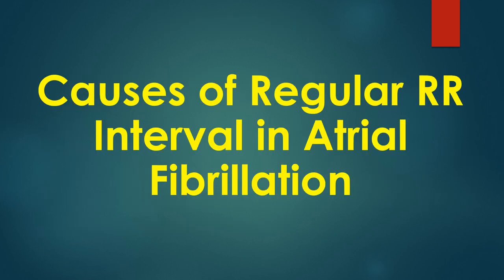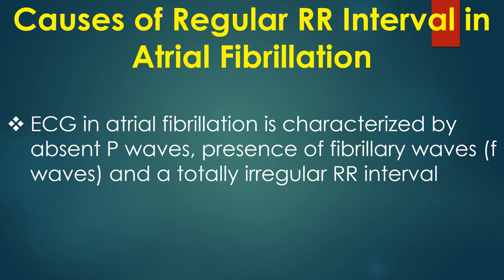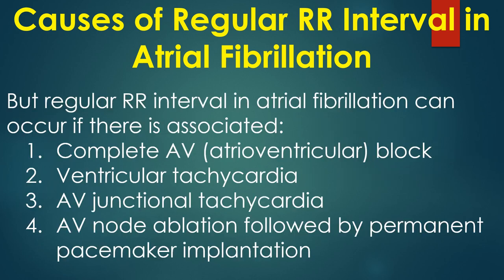ECG in atrial fibrillation is characterized by absent P waves, presence of fibrillary waves or F waves, and a totally irregular RR interval. However, a regular RR interval in atrial fibrillation can occur if there is: (1) complete AV block, (2) ventricular tachycardia, (3) AV junctional tachycardia, or (4) AV nodal ablation followed by permanent pacemaker implantation.